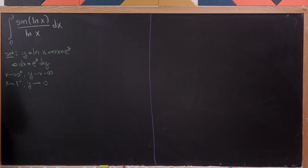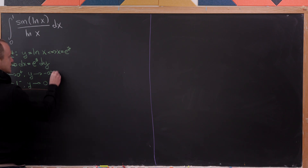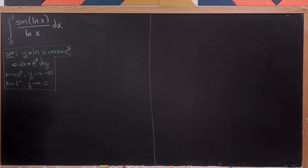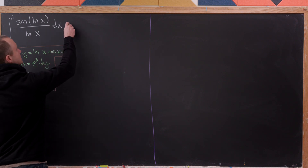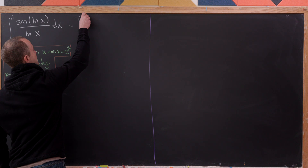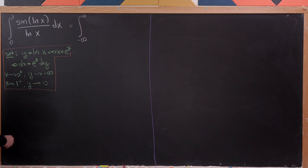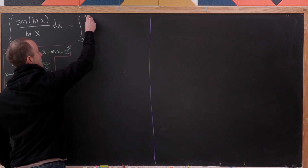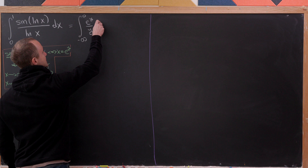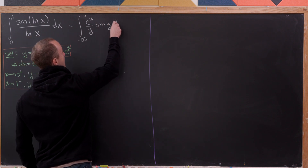Everything needed for our substitution is sorted. Our new integral becomes the integral from minus infinity up to 0 of e to the y over y times sine of y dy.